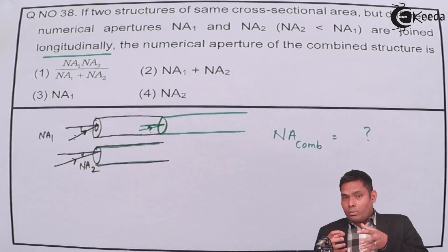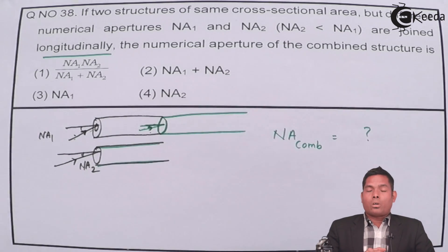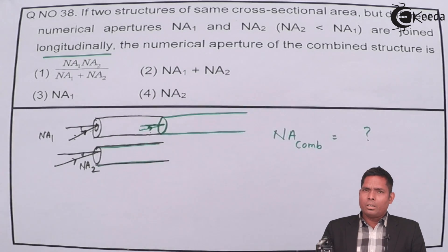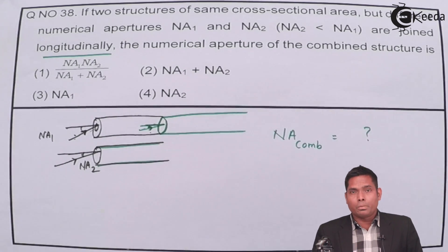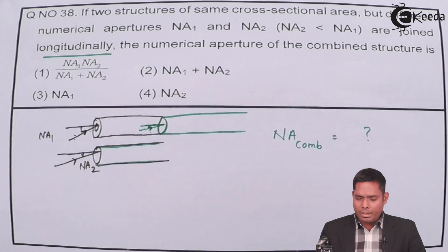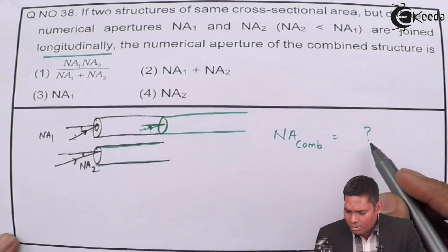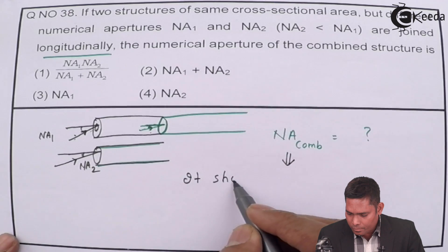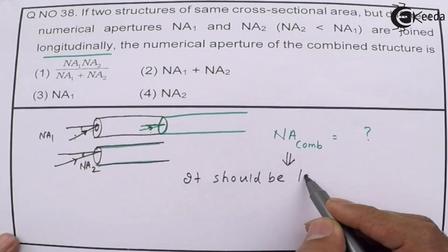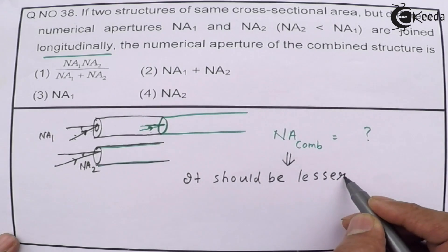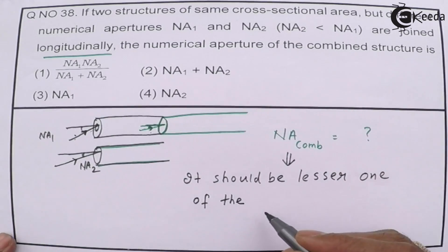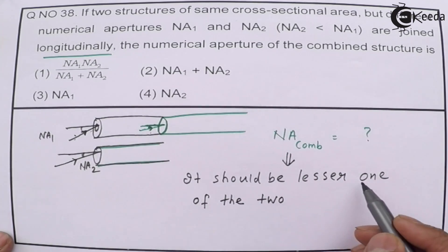So for the structure to allow the light to pass through or to have total internal reflection, the numerical aperture of the combination should be the least value of the two. That means the numerical aperture of the combination should be the lesser one of the two.